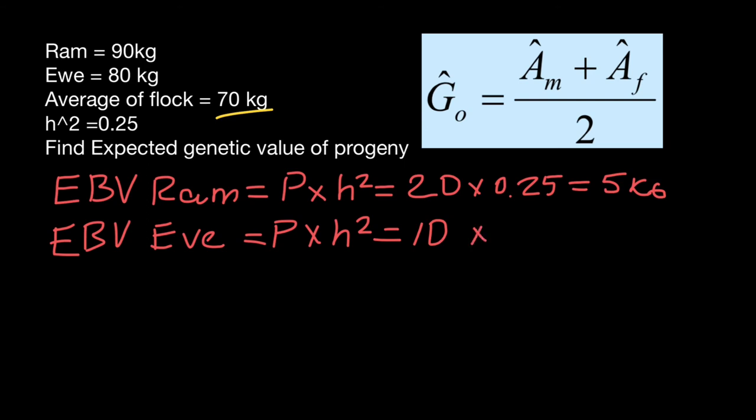times narrow-sense heritability, which is 0.25. So times 0.25, and we are going to get 2.5 kilograms for female.